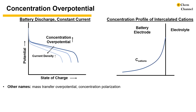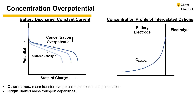Concentration overpotential can also be named mass transfer overpotential or concentration polarization. Battery discharge is a situation where the capacity or state of charge is limited by concentration overpotential at fast charging rates. As you can see, at higher current density it takes greater potentials to achieve the same state of charge. Because of the voltage window of batteries, some capacities just become inaccessible at higher rates. Concentration overpotential originates from the limited mass transport capabilities in the system. This mass transport limitation can be in the electrolyte solution for solution-based electrochemistry, or in the solid-state materials for batteries.